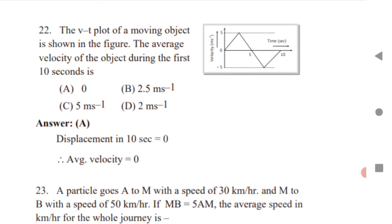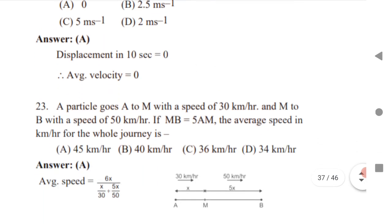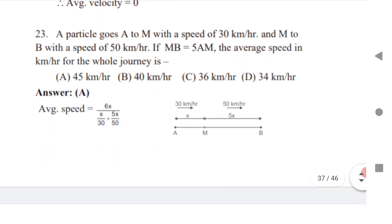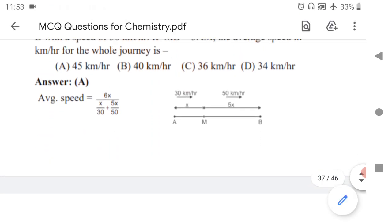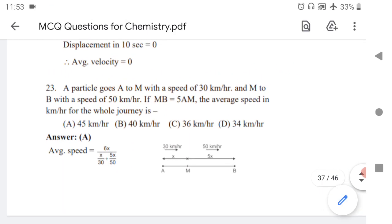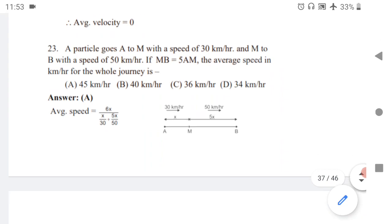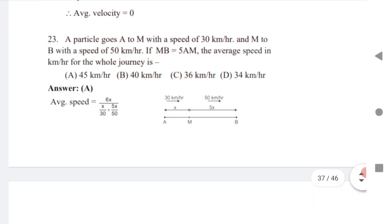Next is question 22. When you see the velocity-time graph and it asks you to calculate the average velocity — whenever the upper and lower portions of the graph are the same, the displacement is zero. When displacement is zero, the average velocity is also zero. This is a very simple question.